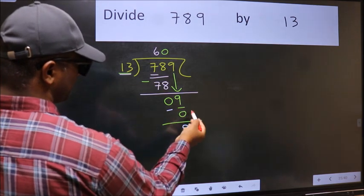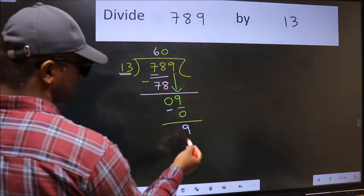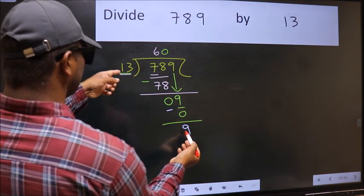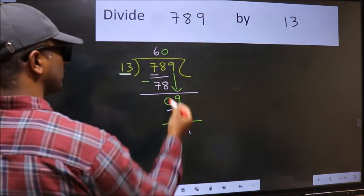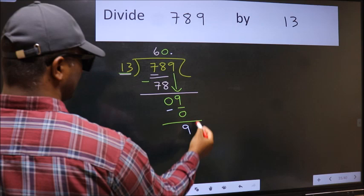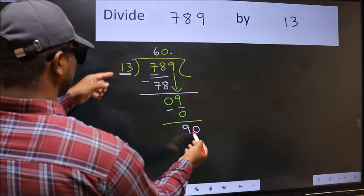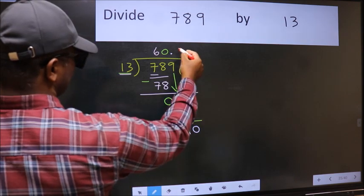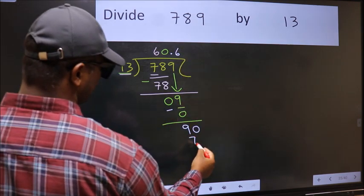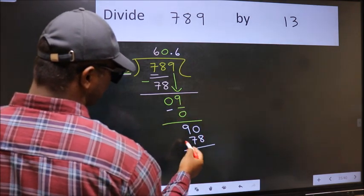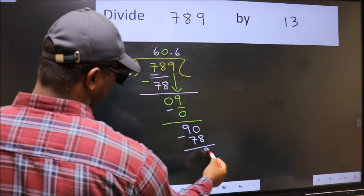Over here, we did not bring any number down. 9, and 9 is smaller than 13. So now we can put dot and take 0, so 90. A number close to 90 in 13 table is 13 times 6, 78. Now we should subtract, we get 12.